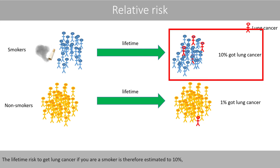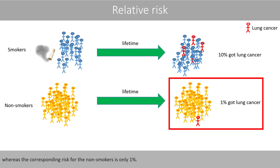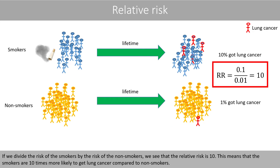The lifetime risk to get lung cancer if you are a smoker is therefore estimated to 10%, whereas the corresponding risk for the non-smokers is only 1%. If you divide the risk of the smokers by the risk of the non-smokers, we see that the relative risk is 10. This means that smokers are 10 times more likely to get lung cancer compared to non-smokers.